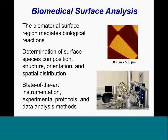So if we want to understand and control the biological performance of a material, we need to know in as much detail as possible what's the surface composition, structure, orientation, spatial distribution, et cetera, so we can make a relationship between surface property and biological performance. And to do that requires state-of-the-art instrumentation, development of specialized experimental protocols, and data analysis methods.